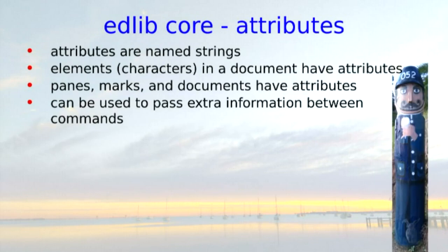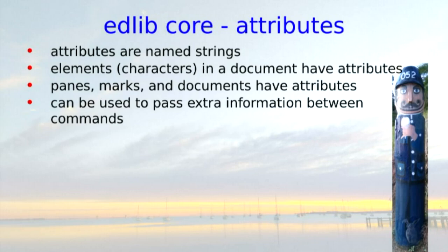And then there are attributes — there are always attributes. Attributes allow you to pass extra information. Attributes are just a text string equals a text string. I've got a word count module — you send it a mark saying I want to know how many lines, words, and characters there are leading up to this mark, and it does the counting and attaches attributes to the mark. You can store attributes on every character in a buffer — so you could mark spelling mistakes that way. A directory document has one character for each file in the directory, and that character has a bunch of attributes: name, owner, date, size, permissions, and so on.